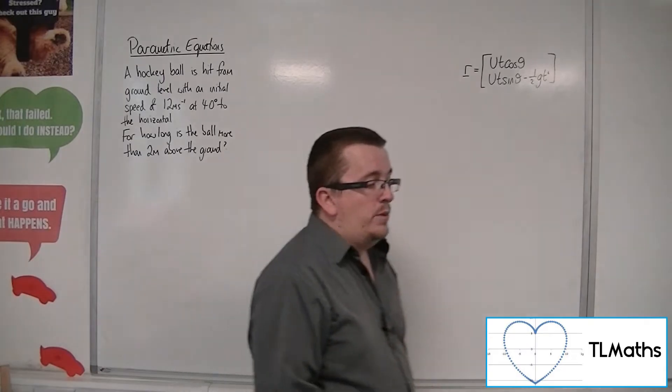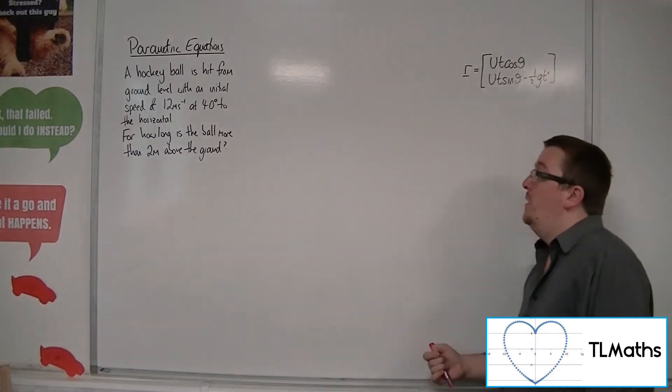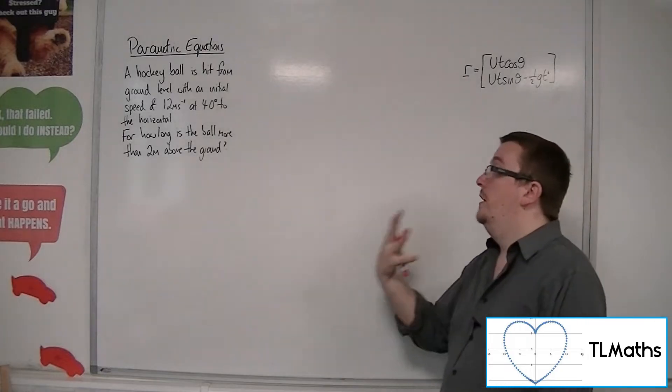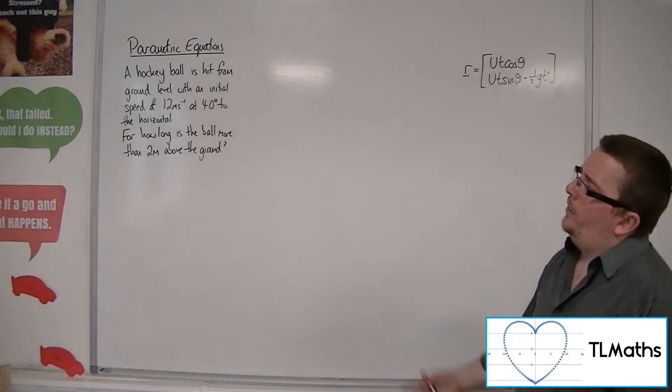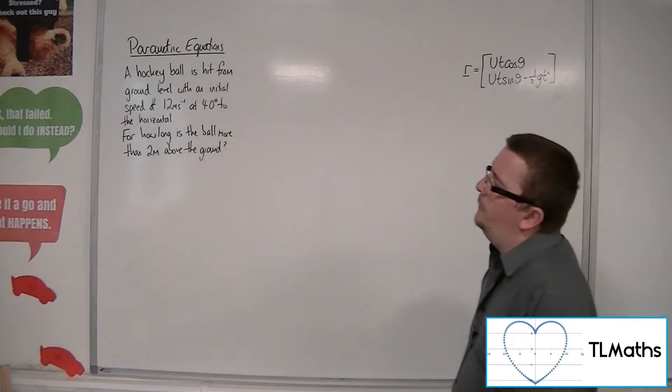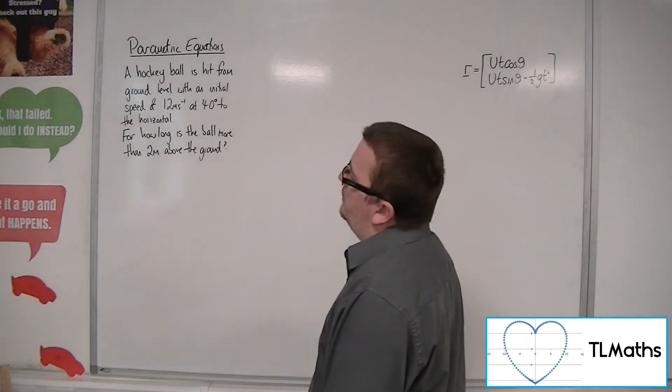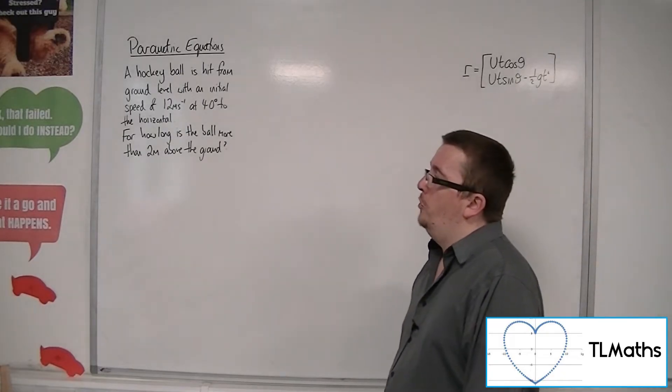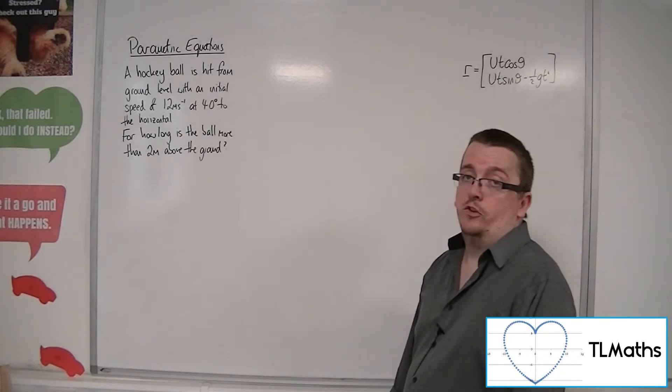So when we're dealing with a projectile problem like this, then we can utilise the parametric equations situation in order to solve it. A hockey ball is hit from ground level with an initial speed of 12 metres per second at 40 degrees to the horizontal. For how long is the ball more than 2 metres above the ground?